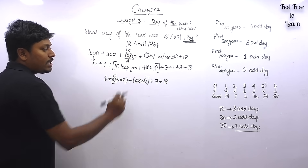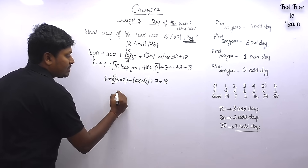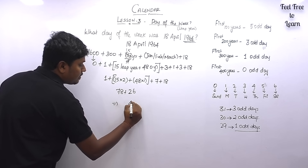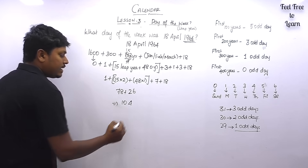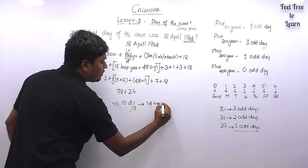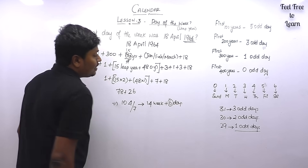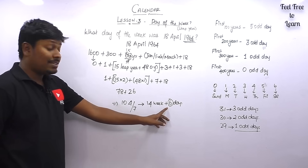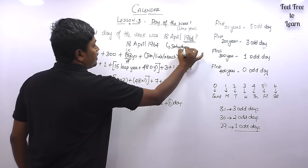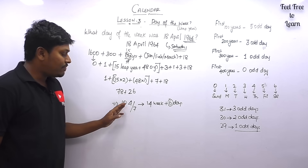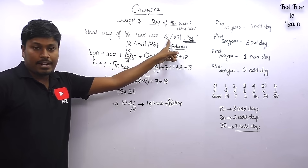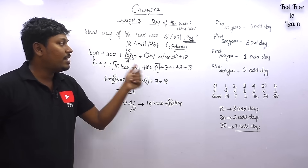15 × 2 = 30, and 48 × 1 = 48. Adding all values: 48 + 30 = 78, plus 3 + 1 + 3 + 18 + 1 = 26, giving a total of 104. Dividing 104 by 7: 14 × 7 = 98, leaving 6 odd days. So 18th April 1964 falls on the 6th odd day, which is Saturday. Saturday is the answer for question 2.